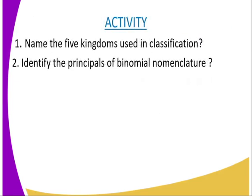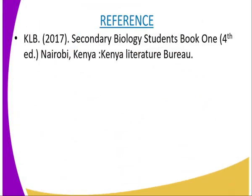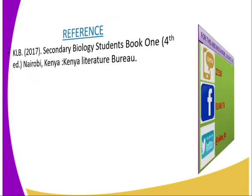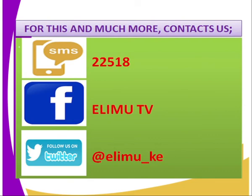We have several activities: name the five kingdoms used in classification as we have seen, and identify the principles of binomial nomenclature. For further reference, go to the KLB edition of 2017, Secondary Biology Students Book 1, Nairobi, certified by the Kenya Literature Bureau. For further information, you can send us an SMS through the number 22518, or contact us through our Facebook page Elimu TV, or tweet us at Elimu TV underscore Kenya. Thank you for watching and stay tuned for us to learn together. Thank you.